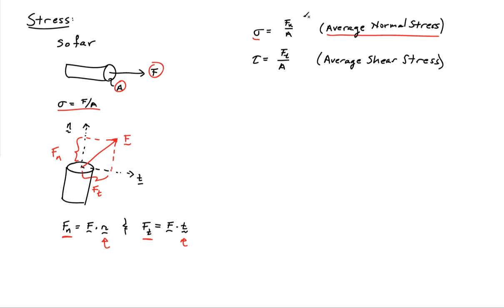What we call the average shear stress is the tangential component divided by the area, and we'll use the symbol tau to denote the average shear stress. So now we have two different kinds of stresses: normal stresses and shear stresses.